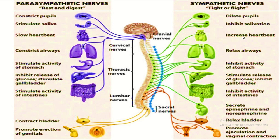Parasympathetic causes a slow heart rate. But during a threat, our body needs oxygen, so Sympathetic causes an increased heart rate. The nerves involved include cranial nerves, cervical nerves, and thoracic nerves. Parasympathetic causes constriction of airways during rest, while Sympathetic causes dilation of airways.